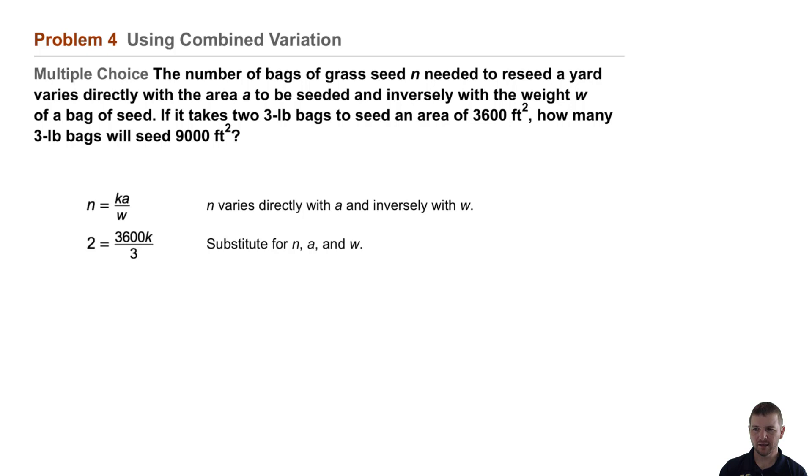Then we'll work to solve for k. We'll multiply each side by 3, and then divide each side by 3,600, and find that k equals 6 over 3,600, which simplifies to 1 over 600. Knowing our constant of variation k, we can now write that the combined variation equation is n equals a over 600w.